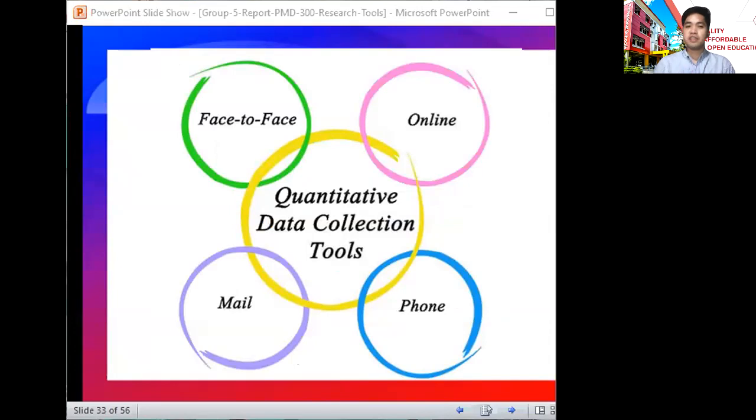In quantitative research data collection, researchers usually gather data through face-to-face by distributing questionnaires personally to targeted respondents, by online or by giving some link that redirects to a survey questionnaire form like Google Form, by mail or sending personal mail to targeted respondents, and finally by using phone interviews via mobile phone or telephone.